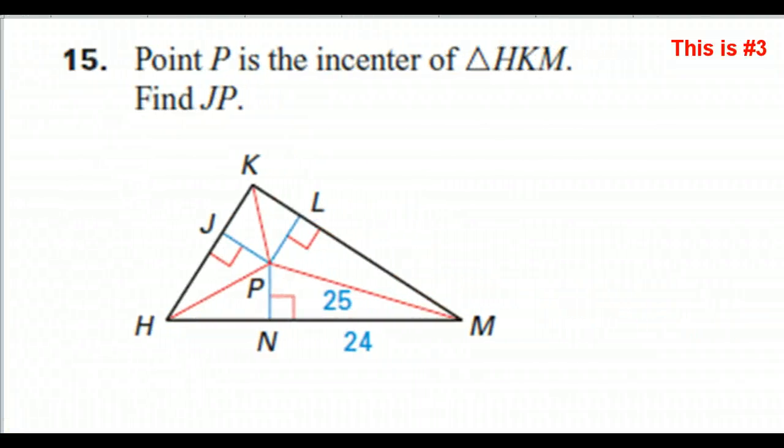Number 15. Point P is the incenter of triangle HKM. Find JP.